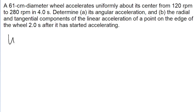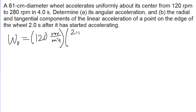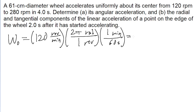So first off, for the initial speed, omega-naught of 120 revolutions per minute, we'll convert this into radians per second by first using the fact that two pi radians is one revolution. Then to convert from minutes into seconds, we divide by 60, because one minute is 60 seconds. Doing this calculation, we find that omega-naught is 12.57 radians per second.